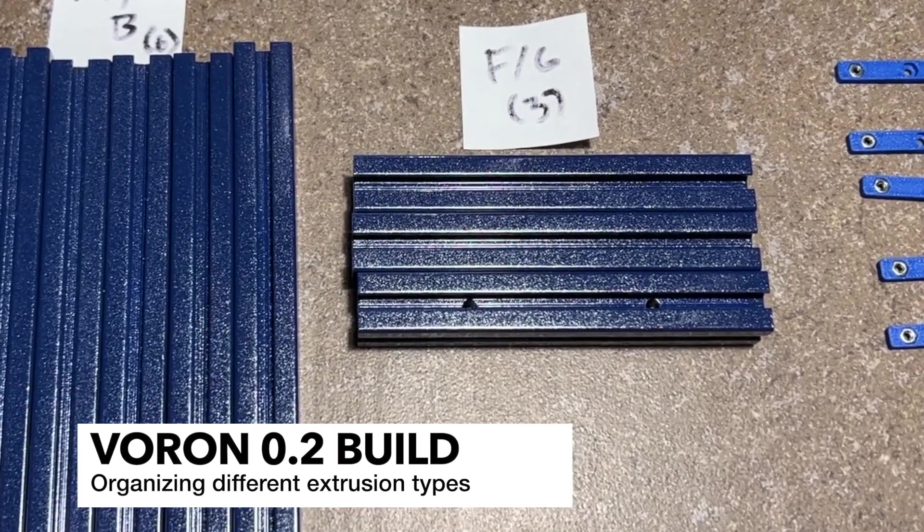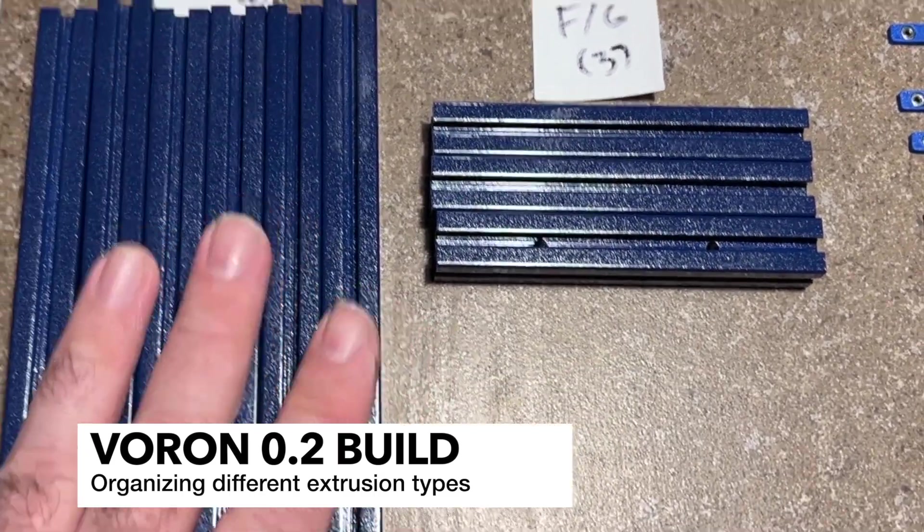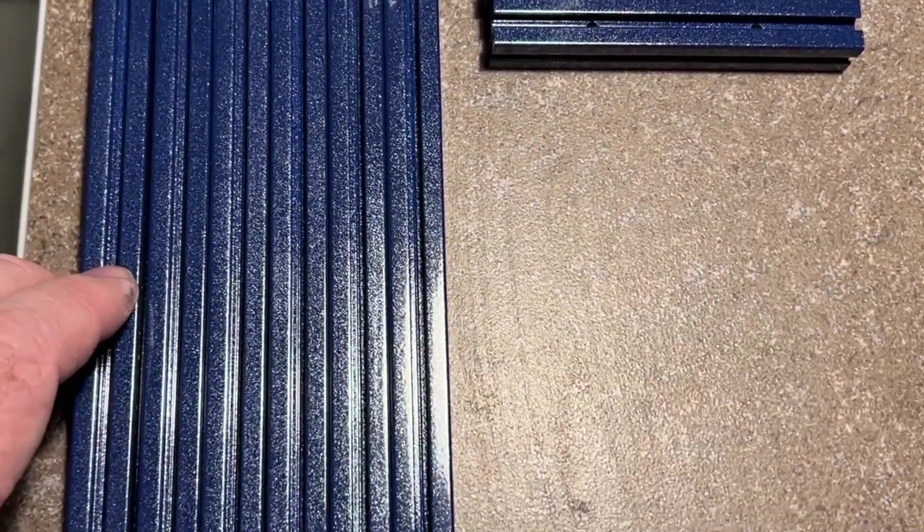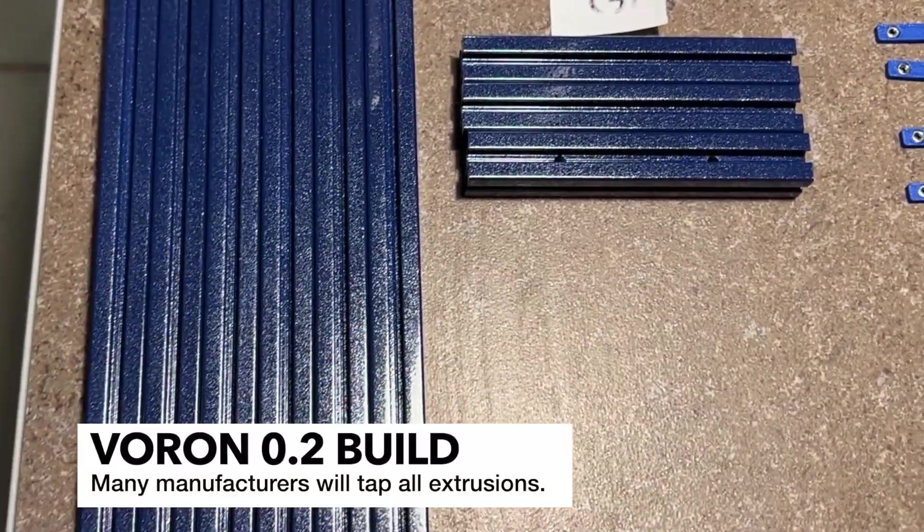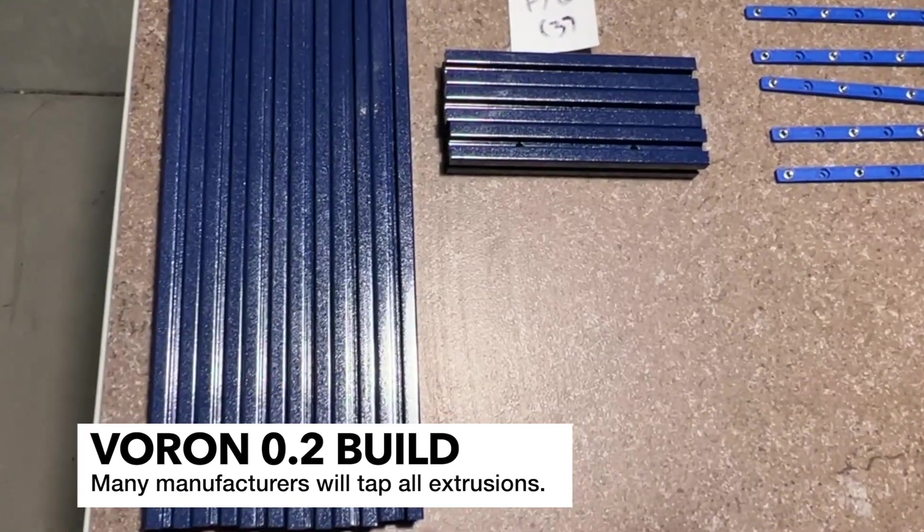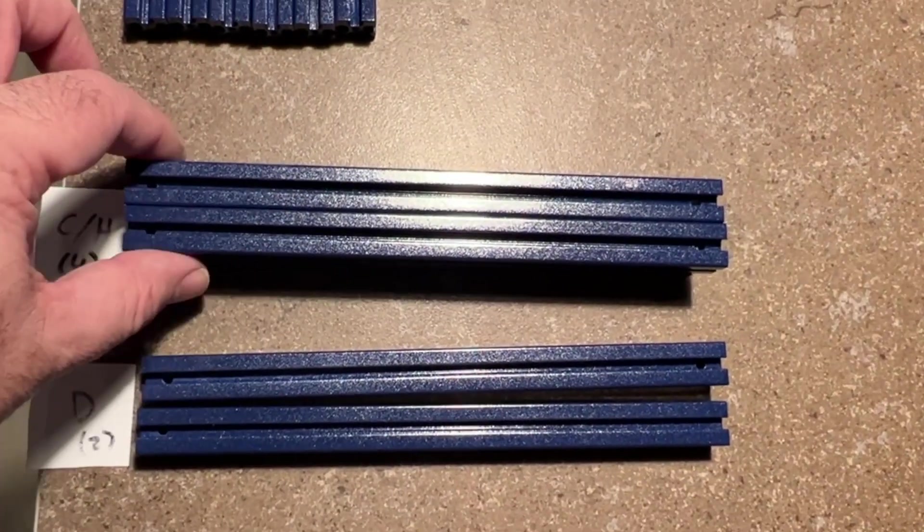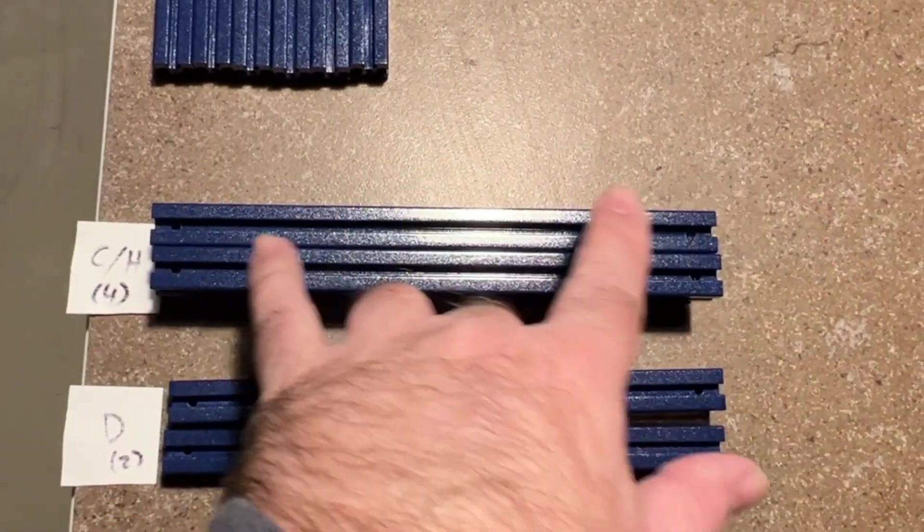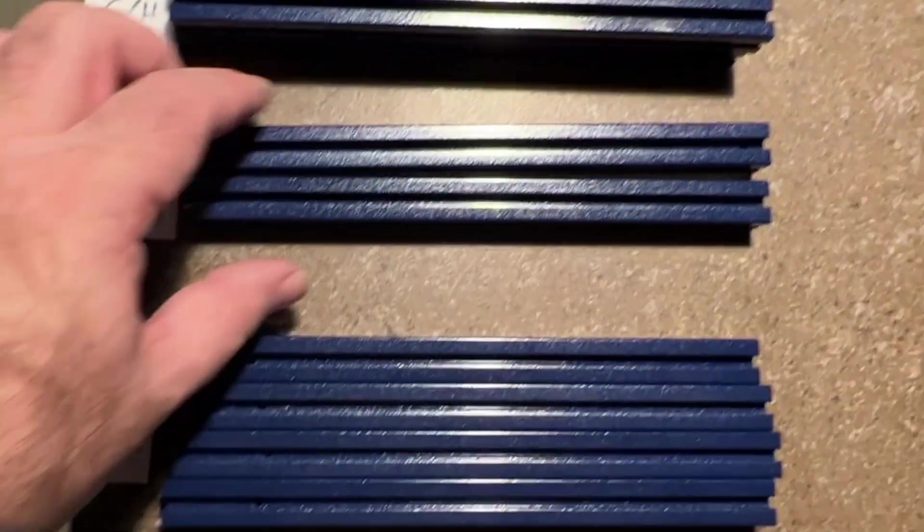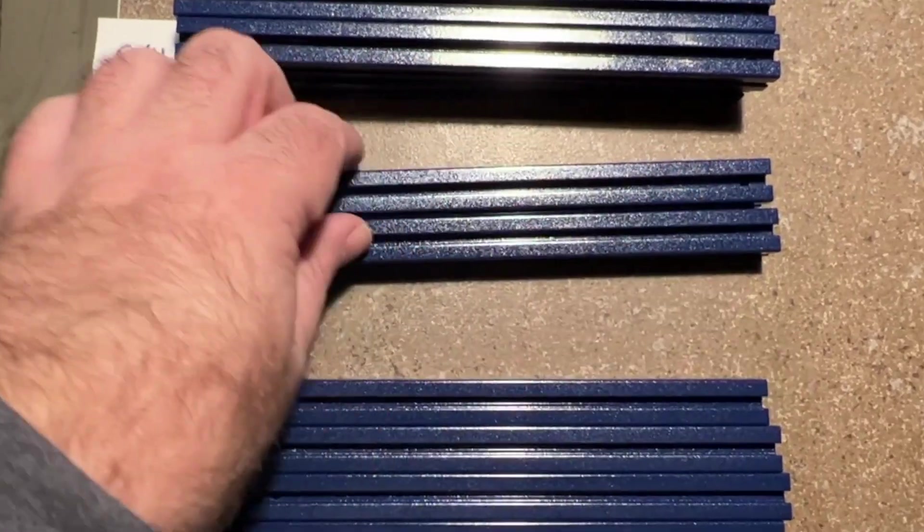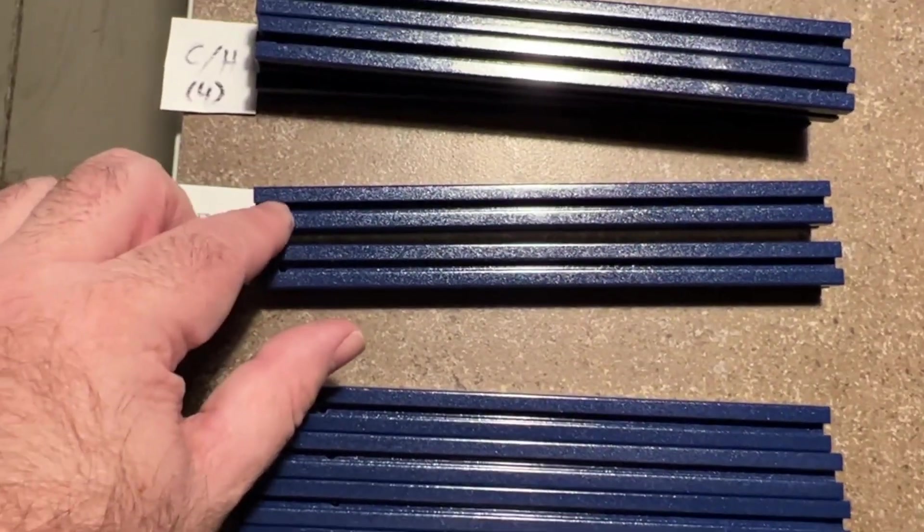I've gone ahead and laid mine out. You can see I've got the A and B, in my case they were the same. The A and B, the only difference in the manual is that the ends are tapped, otherwise there's no holes. I've got C and H, which are also the same, same difference where the difference is tapping, but these both have two holes. D is one that has three holes, so you've got holes here, holes here, and you rotate it and you've got a hole here.